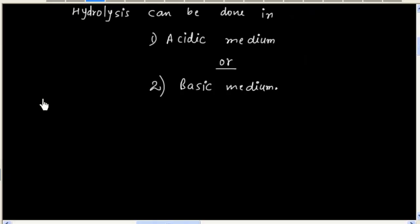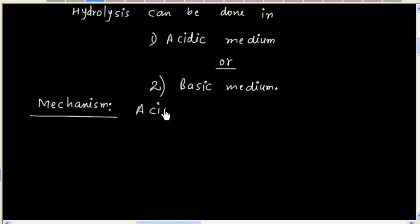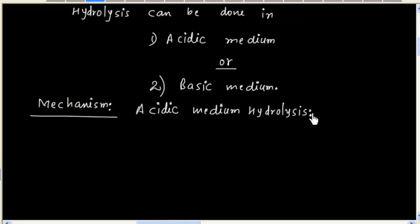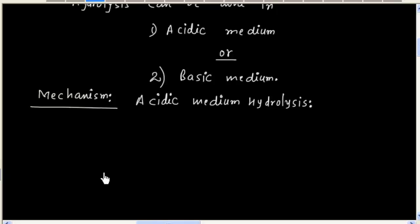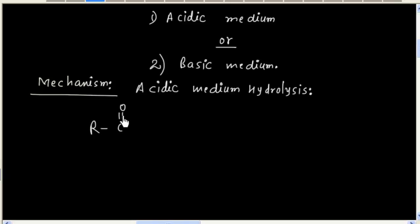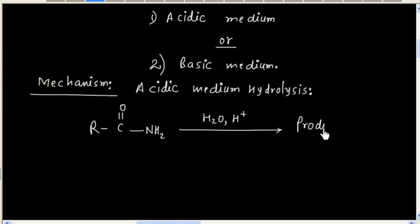Let us discuss the mechanism for acidic medium hydrolysis. We have amide and it is treated with water and acid, so we have to derive the product using the mechanism.